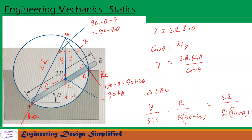We also have another triangle O, C, and the small c. If this angle is theta, then cos θ = x / y, where y is the distance from O to the small c. So cos θ = x / y, and since x = 2R sin θ, we get y = 2R sin θ / cos θ.